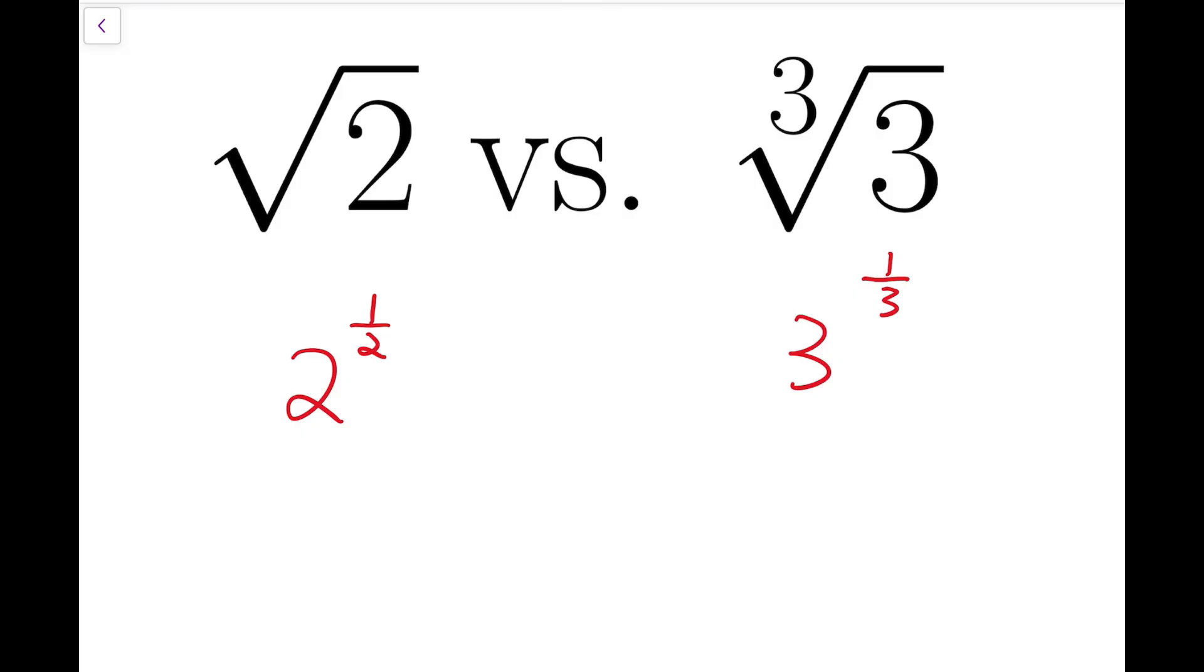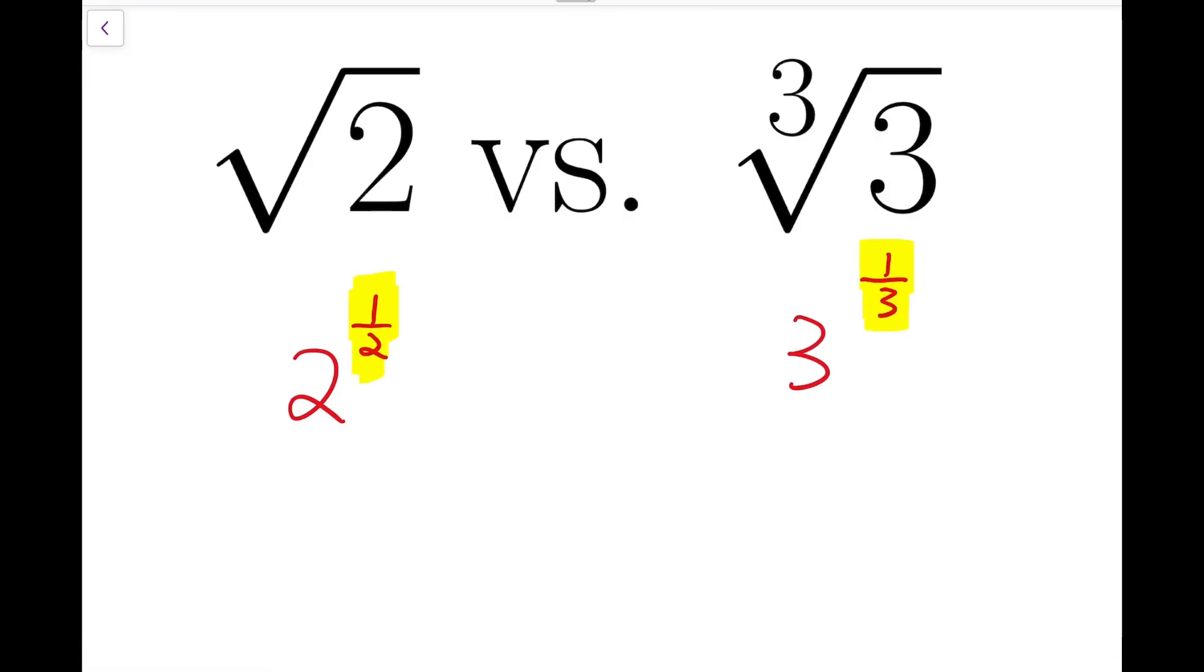So I would rather go for rewriting the indices instead. Now notice that these two numbers are both about 2 and 3, so I'm going to consider the LCM of these two numbers, which is 6.